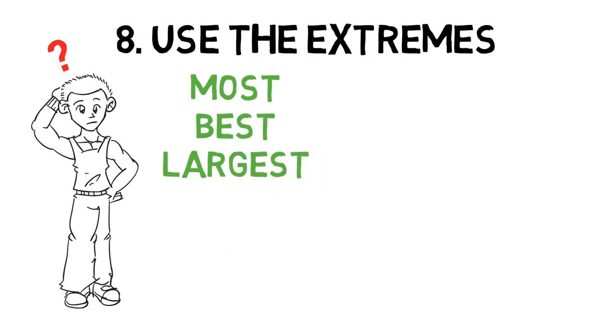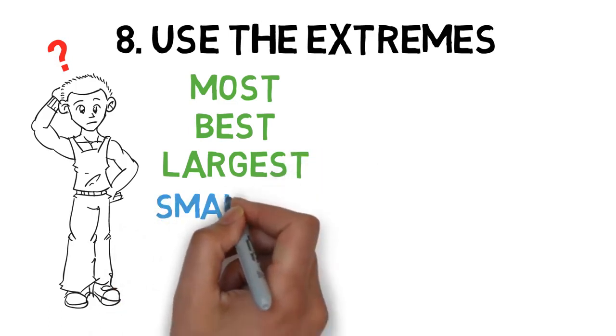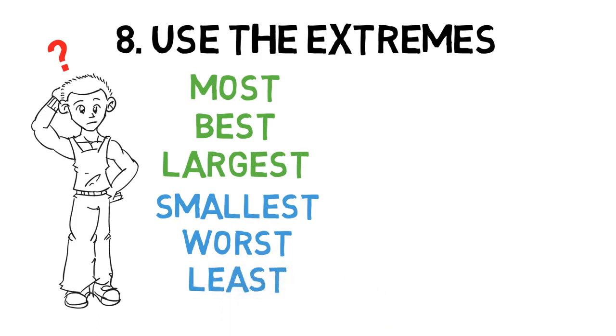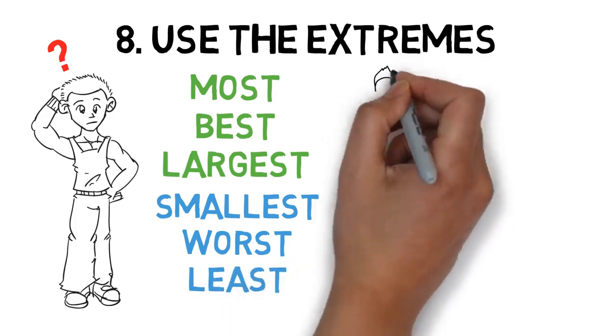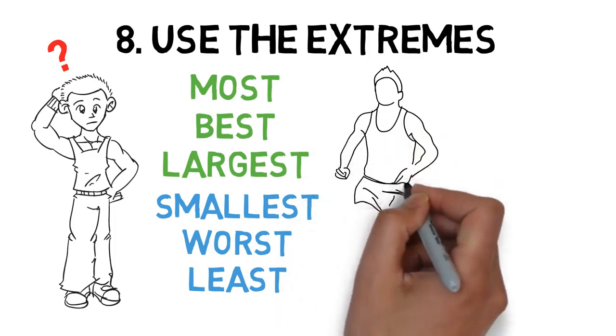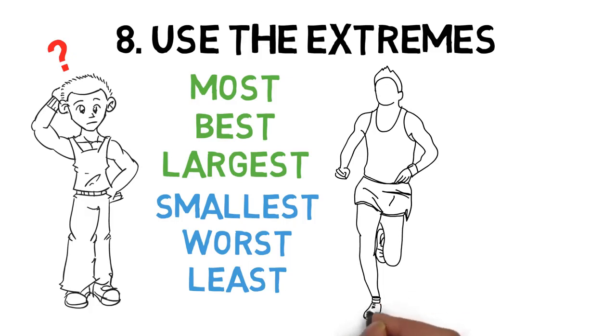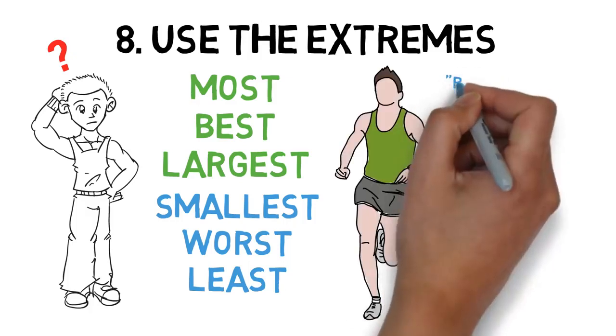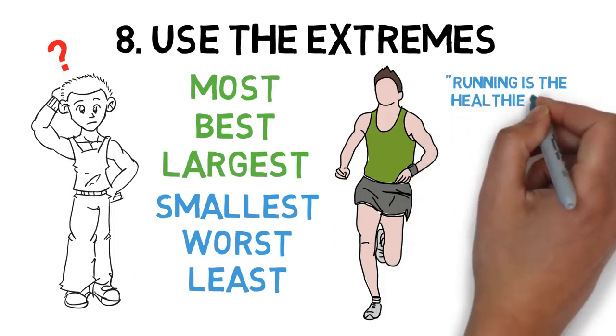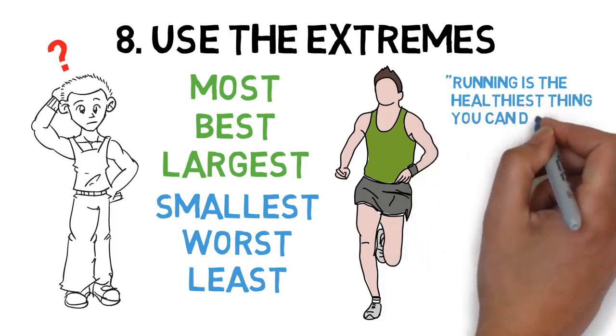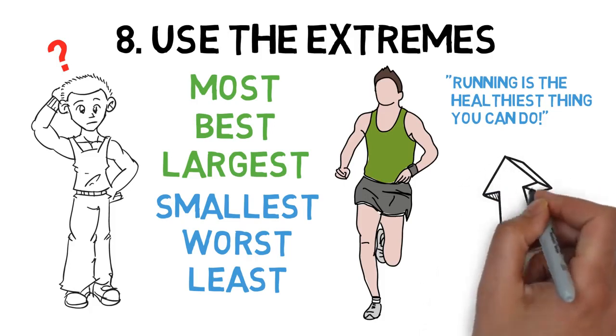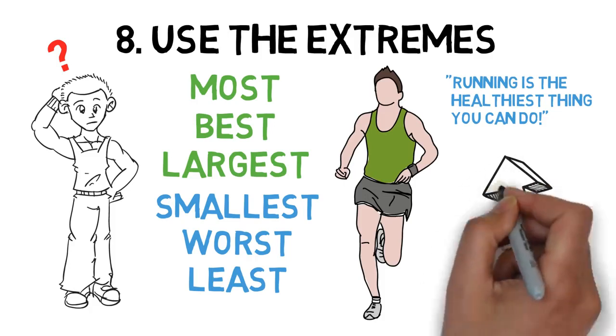Here is a simple example of using the extremes. Let's say that you wanted to convince someone to go running with you. In that case, you could say something like, running is the healthiest thing you can do. Of course, this is just your opinion, but saying that running is the healthiest thing you can do is going to be very convincing. People have a natural tendency to believe in extremes. So if you want to sound convincing, consider using them.